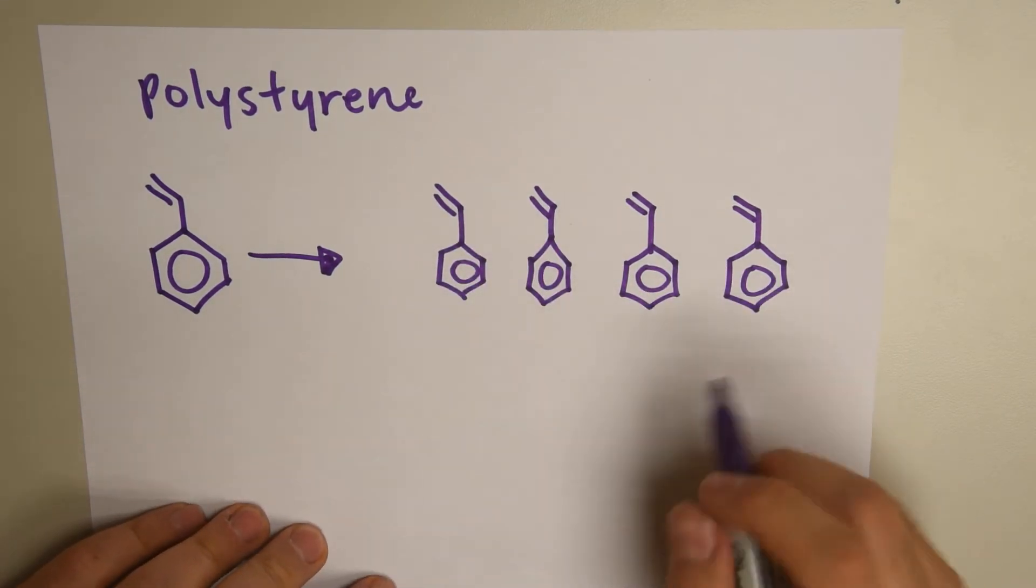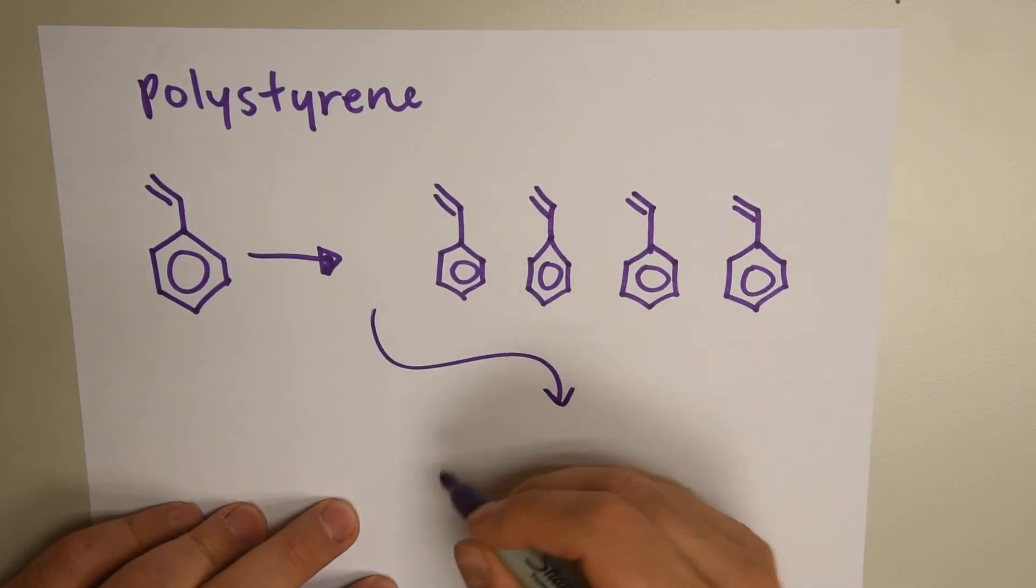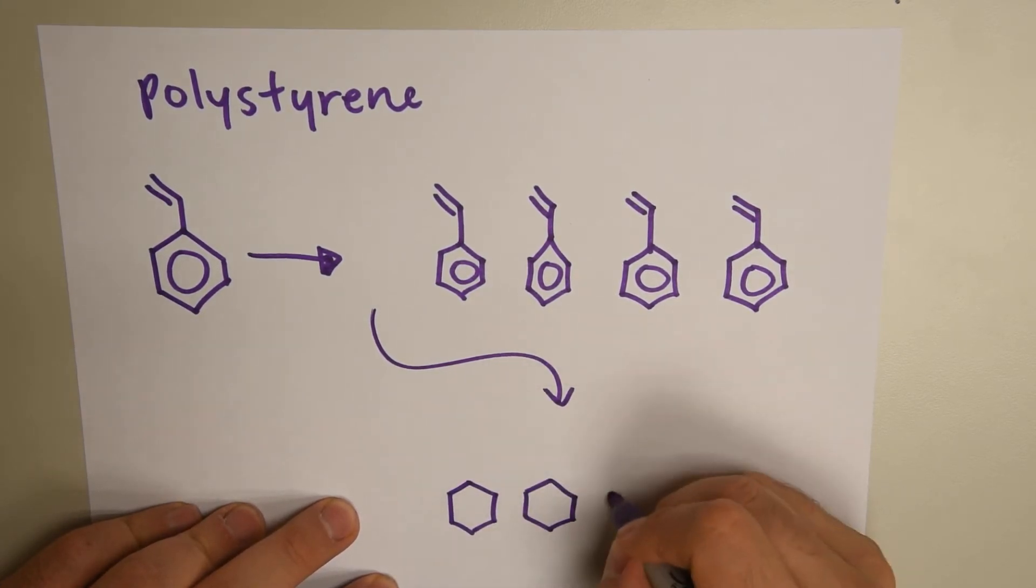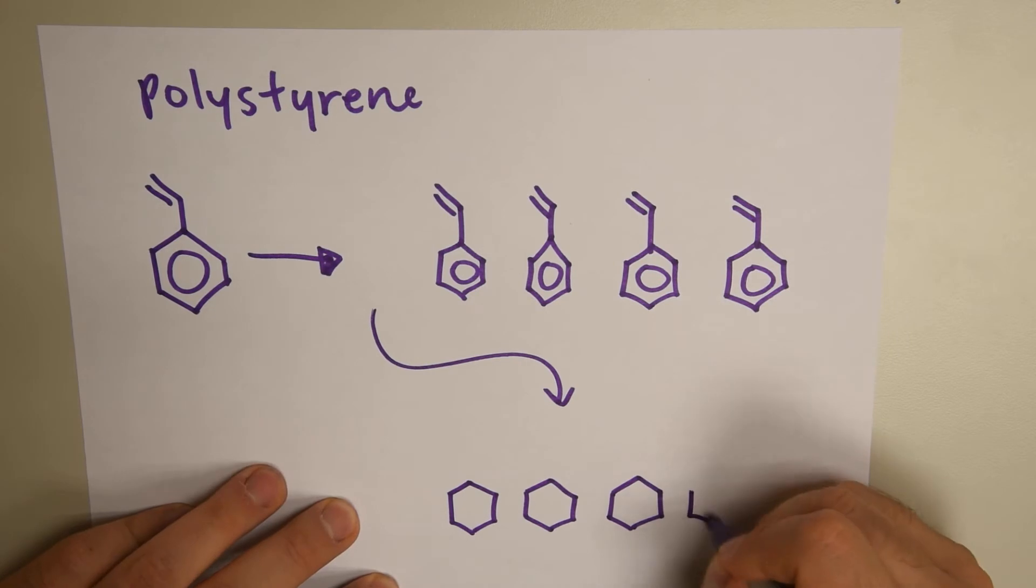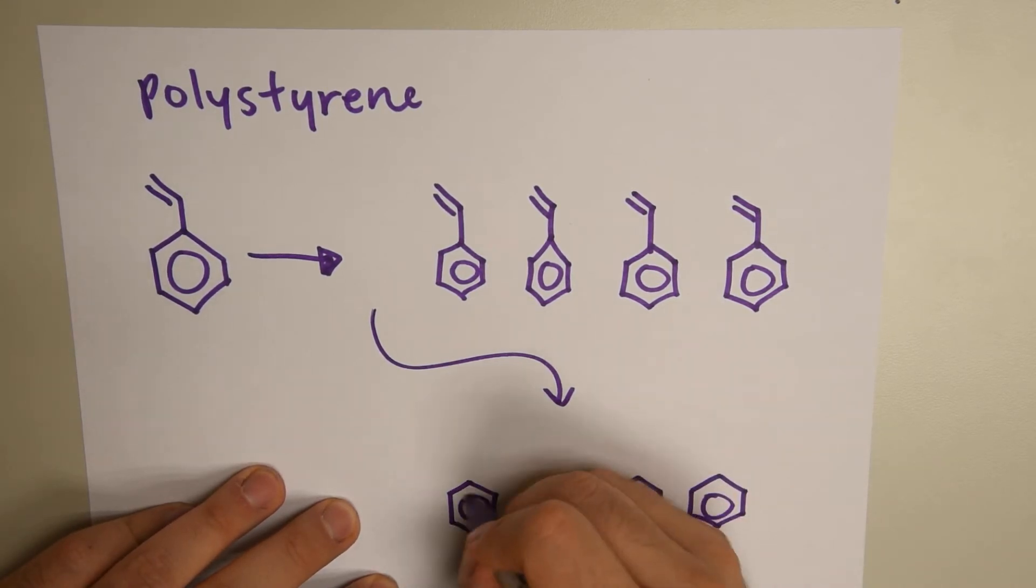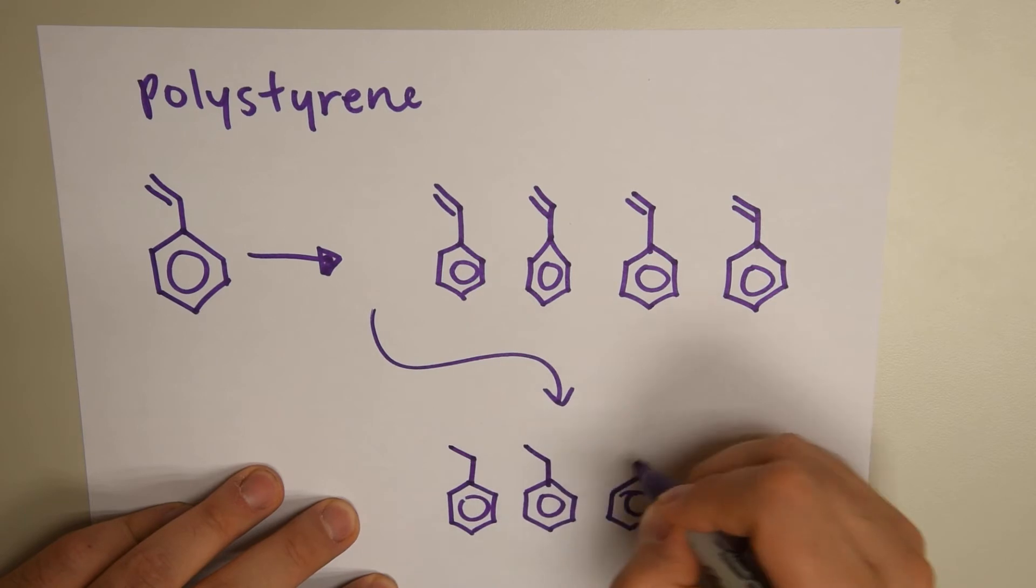And when I redraw it again, remember, these double bonds are breaking. So, my next step is really to draw this. So, I'm going to draw my benzene molecules right here. This will make it easier and neater. And then we draw them without the double bond.